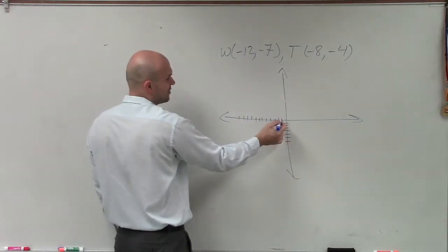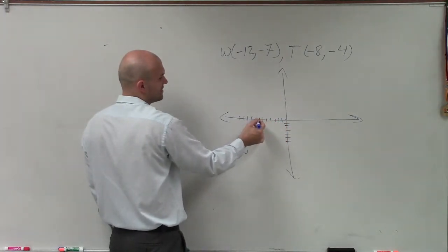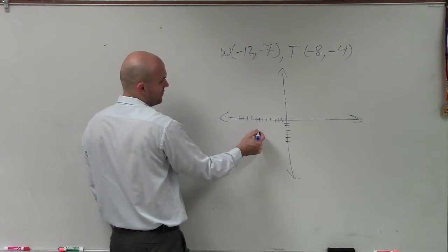And then T is negative 8, negative 4. Count 1, 2, 3, 4, 5, 6, 7, 8, then negative 4 down 1, 2, 3, 4.